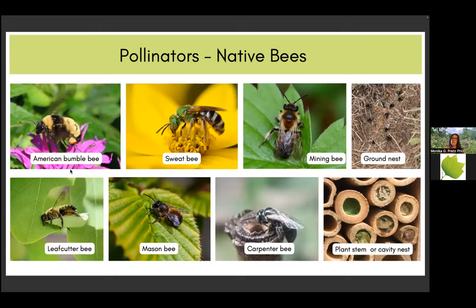70% of our native bees are actually ground-nesting bees — American bumblebees, sweat bees, and mining bees are ground-nesting. About 30% of our native bees are stem or cavity-nesting, like leafcutter bees, mason bees, and carpenter bees. Most bees are solitary, and it's mostly the female that takes care alone of the eggs and the nest. The American bumblebee forms social colonies, usually between 50 to maybe 500 individuals.